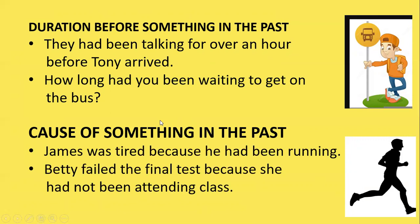For cause of something in the past: 'James was tired because he had been running.' 'Betty failed the final test because she had not been attending classes.' To talk about cause and effect — James was tired because running was the cause. Using the past perfect continuous before another action in the past is a good way to show cause and effect.